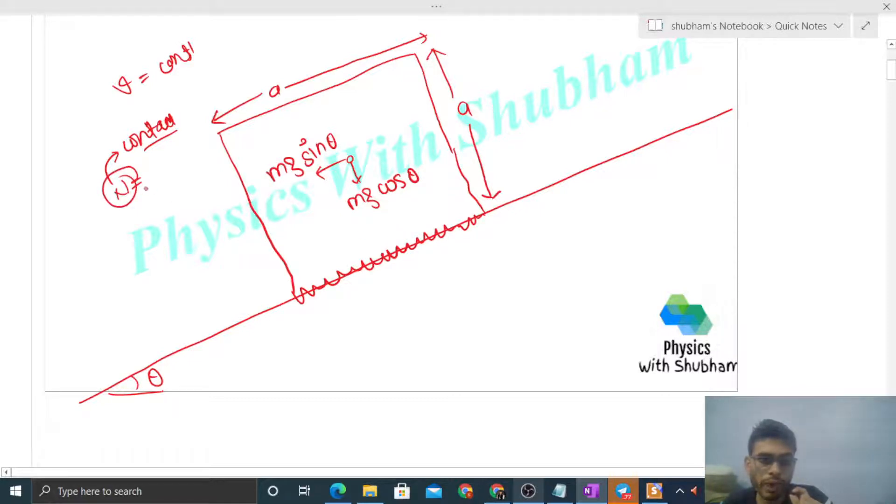But we have to find out the point of application of normal reaction, which is at a distance x from the center. We don't know the value of x for the time being.